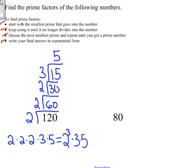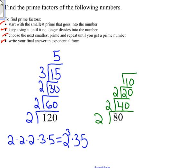Let's see that with another example: 80. Again, I'm going to start with the smallest prime that goes into 80, and that's 2. 2 will go in 40 times. 2 will also go into 40, and it will go in 20 times. 2 goes into 20, 10 times. And 2 goes into 10, 5 times.